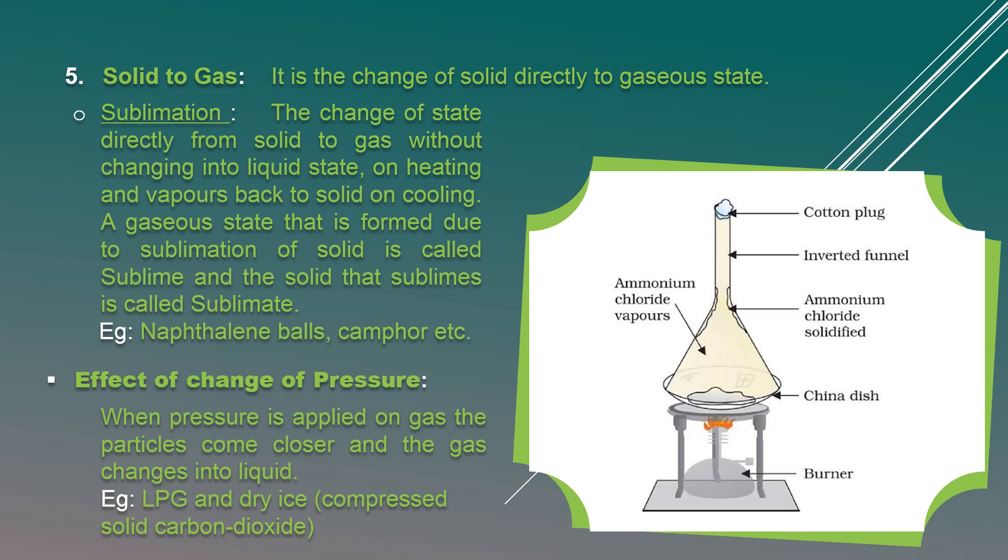For example, sublimation of naphthalene balls and camphor. Here the change of state is directly from solid to gas without changing into liquid state. It is converted directly from solid to gas, this process is called sublimation.